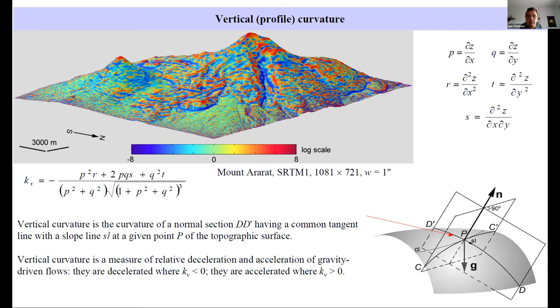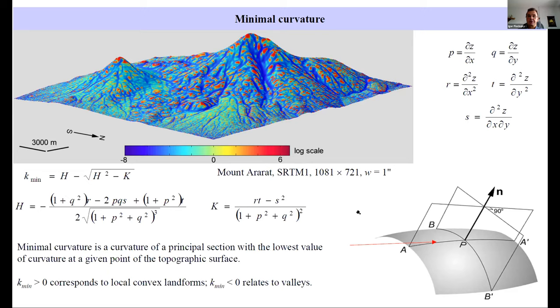These flows are decelerated when vertical curvature is negative and they are accelerated when vertical curvature is positive. From geomorphic point of view, vertical curvature can visualize terraces and shiny brakes. Minimal curvature is a curvature of a principal section with the lowest value of curvature at a given point of topographic surface.